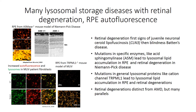Looking at a mouse model of mucolipidosis type 4, in which the TRPML1 ion channel has been removed, we can see a substantial increase in autofluorescence specifically in the RPE cells that resembles some of the issues we see with AMD. These mice go on to form retinal degeneration.